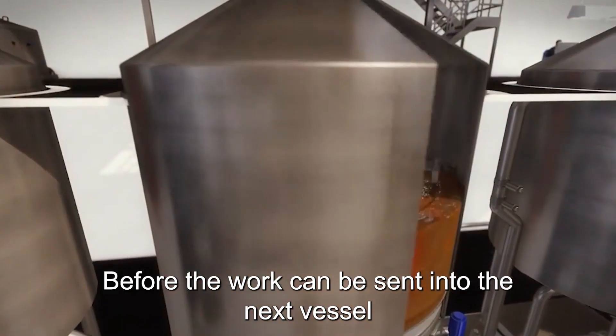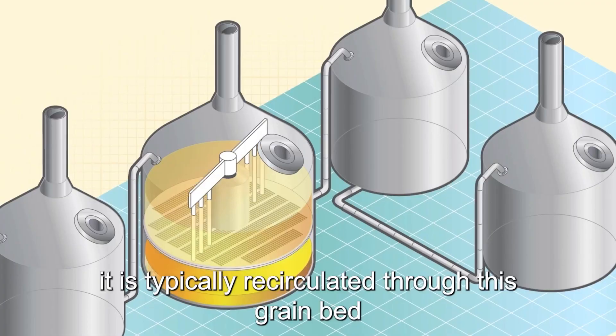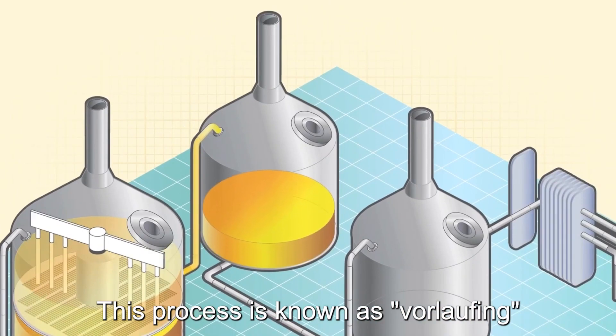Before the wort can be sent into the next vessel, the boil kettle, it is typically recirculated through this grain bed. This process is known as vorlaufing.